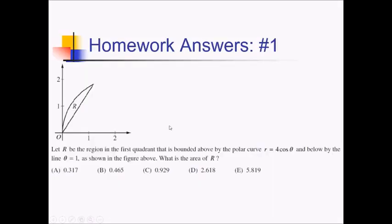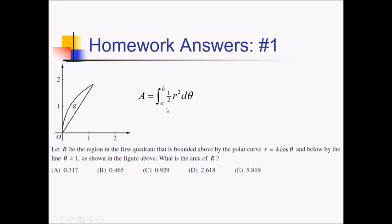On this problem, we're trying to figure out the area of R, which is bounded above by r equals 4 cosine of theta — so this is big R versus little r — and below we've got this theta equals 1 line. So we're using our area formula: the integral from a to b of 1 half r squared d theta. We need limits of integration on this one.